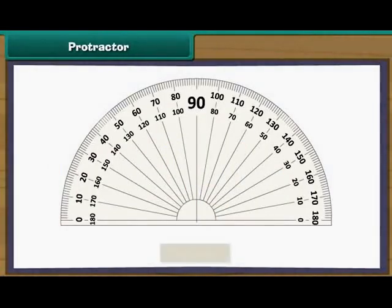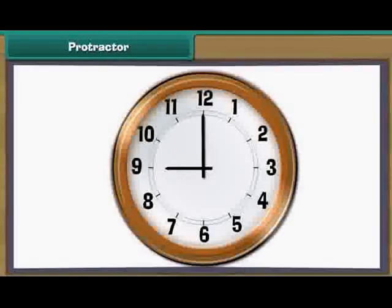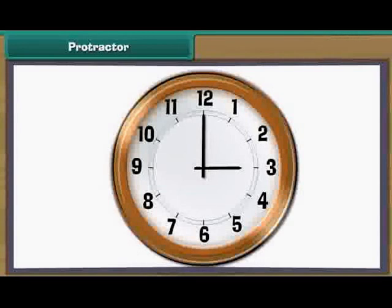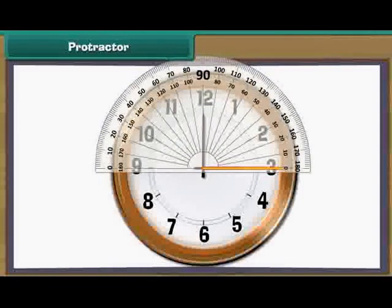This clock shows the time as 3 o'clock. The long hand of the clock is on 12 and the short hand is on 3. Place the protractor on the short hand of the clock. The horizontal line at the bottom of the protractor must coincide with it. The midpoint of the protractor must rest on the common point where the long and short hands of the clock meet. Read the inner marking of the protractor on which the long hand rests. It is 90 degrees. Therefore, 3 o'clock makes a right angle.